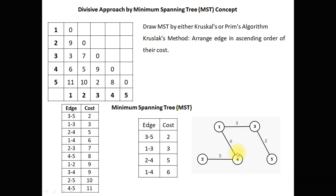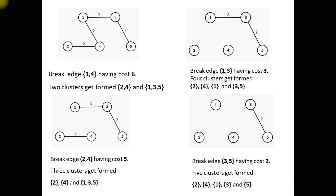All 5 points — 1, 2, 3, 4, 5 — form a single cluster. Now the first step in divisive clustering is to break the largest edge, which is between 1 and 4. So we break edge 1-4 having cost 6. After that 2 clusters are formed: {2, 4} and {1, 3, 5}. This is the end of the first iteration.